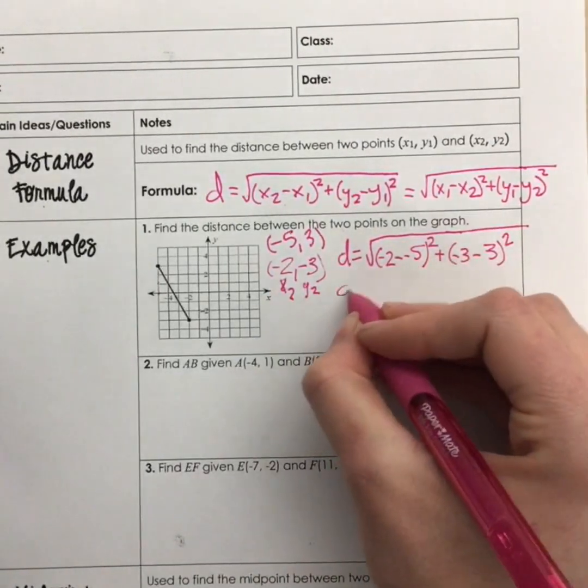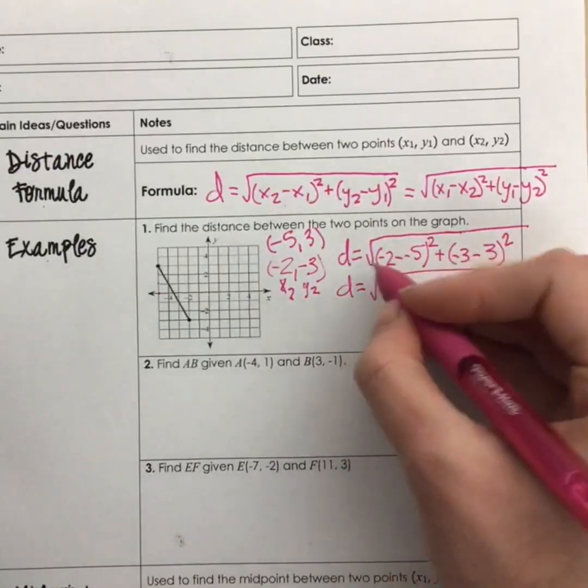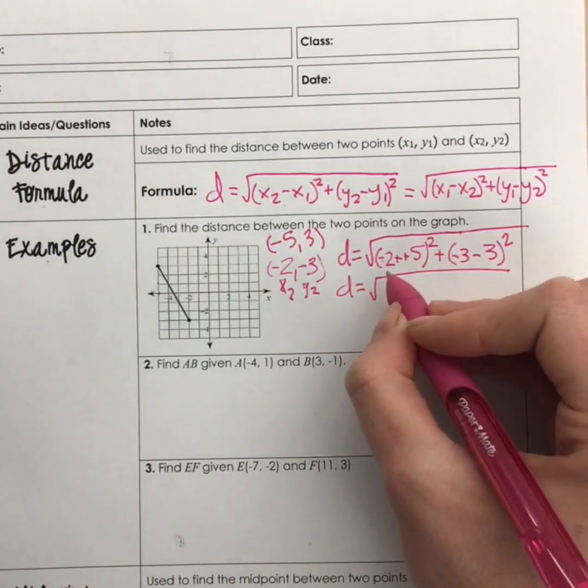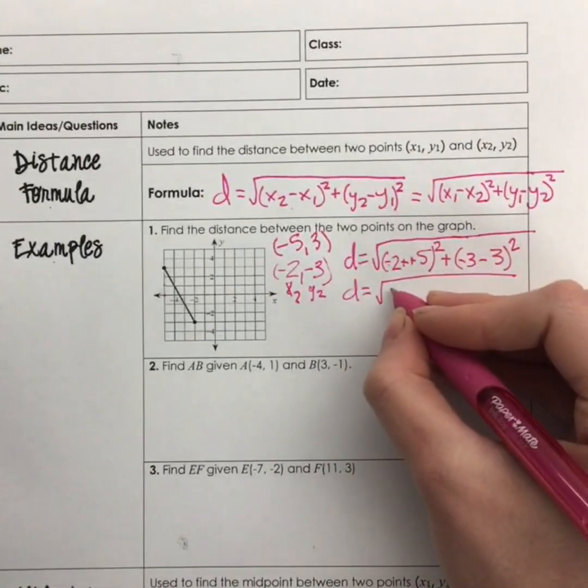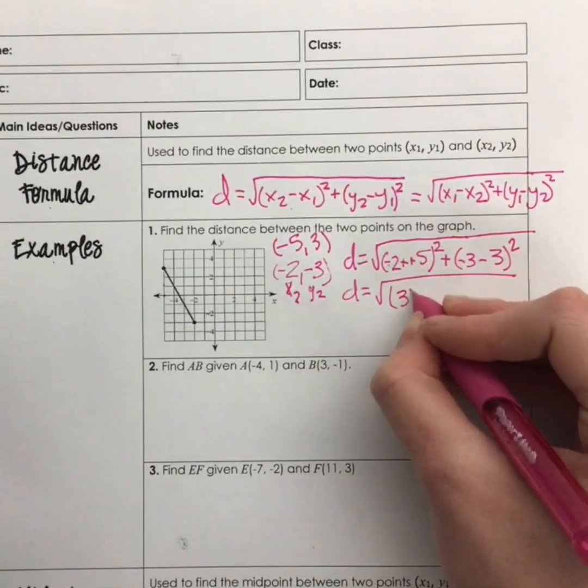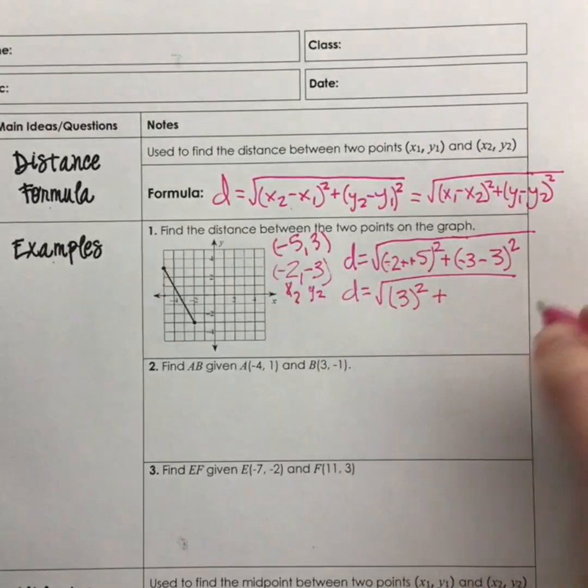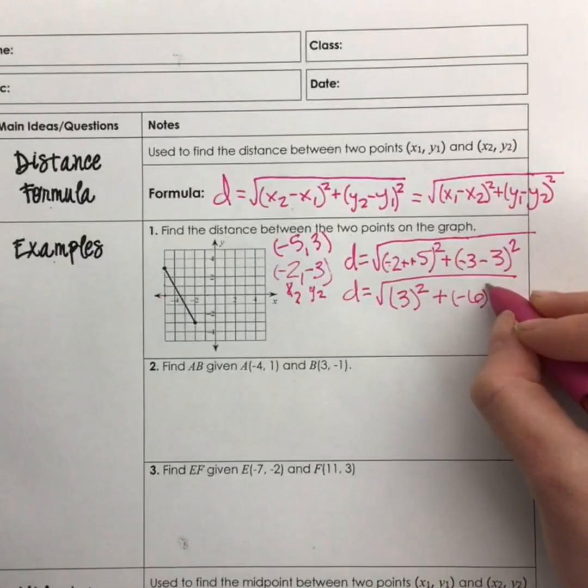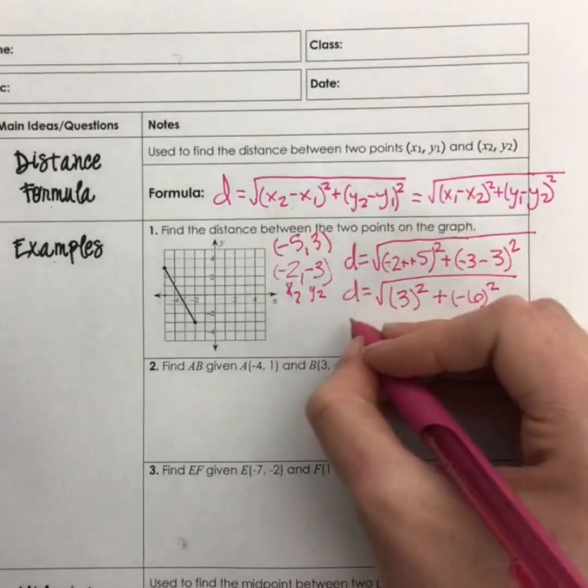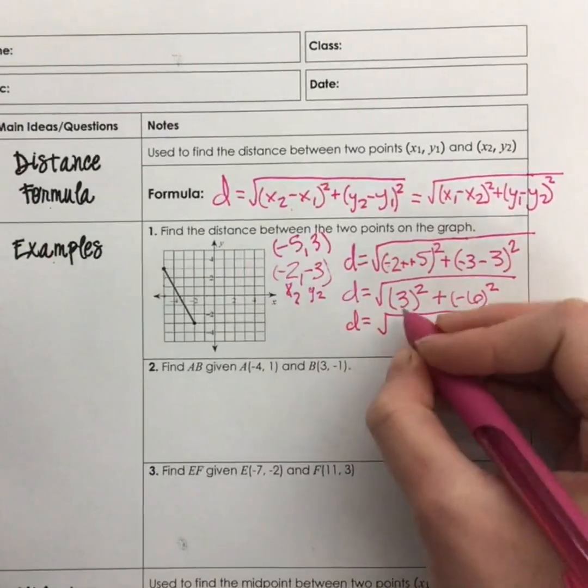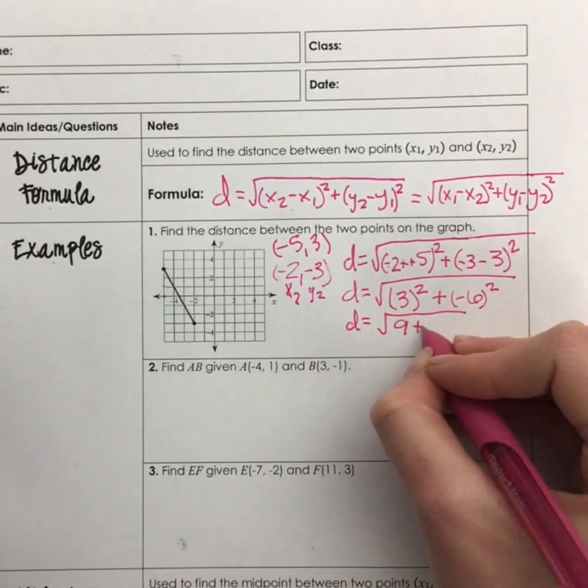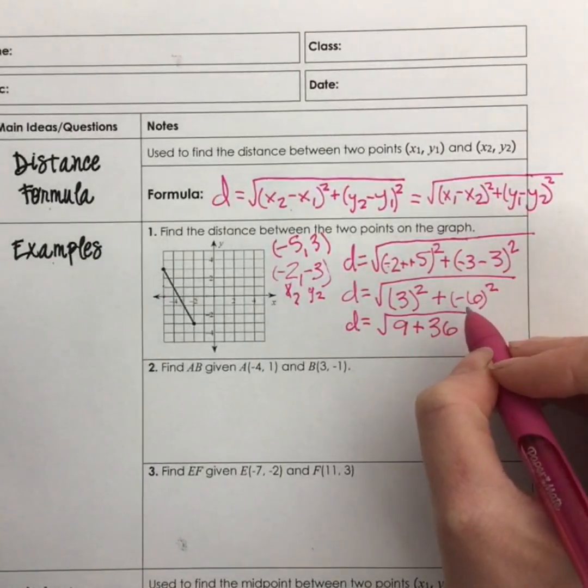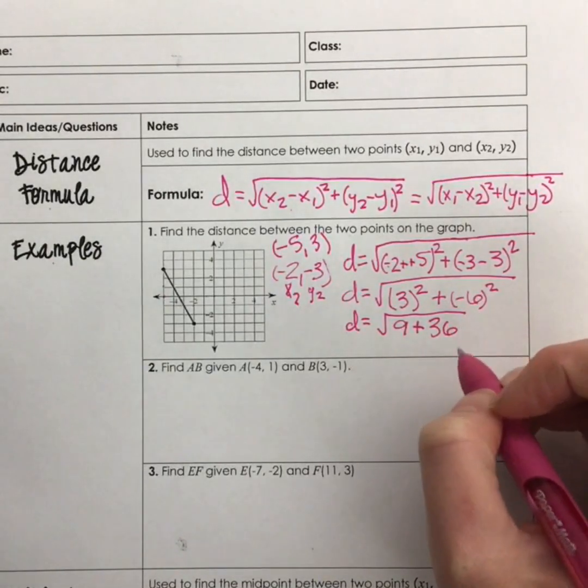So now our distance equals the square root of, well, negative 2 minus a negative 5, that becomes plus a positive. So negative 2 plus 5 will give me 3 squared, plus negative 3 minus 3 will give me a negative 6 squared. Now I can square both of these numbers. 3 squared will give me 9, and 6 squared will give me a positive 36. Even though it's negative, I'll end up multiplying two negatives together to get a positive.